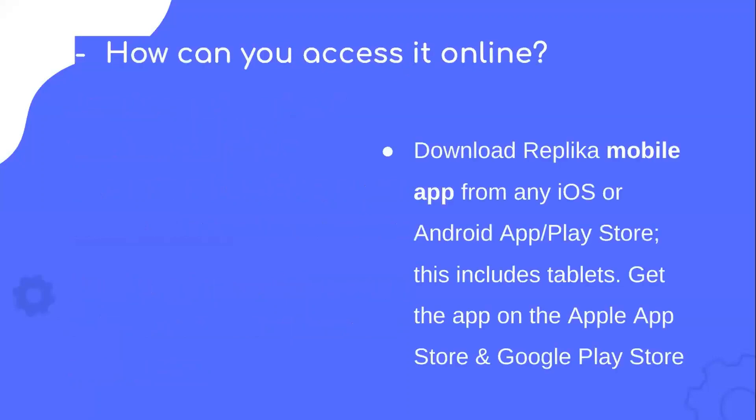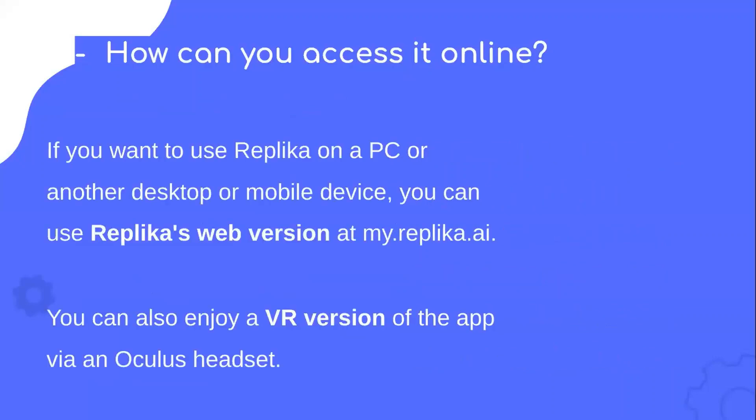How can you access it online? Download the Replika mobile app from any iOS or Android app store, including tablets and other devices. Get the app on the Apple App Store and Google Play Store. If you want to use Replika on a PC or desktop, you can use Replika's web version at my.replika.ai. You can also enjoy a VR version of the app via an Oculus headset.